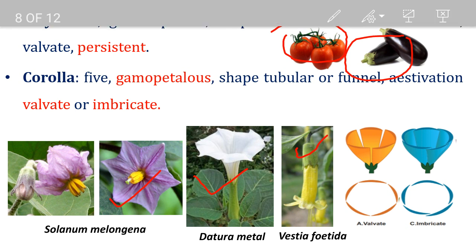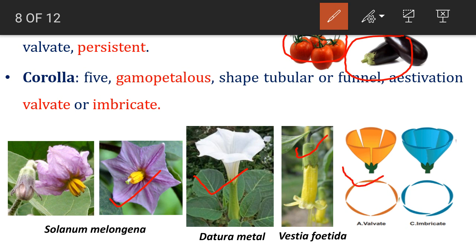Aestivation in the calyx is valvate — members of the whorl remain side by side and do not overlap. The corolla shows both valvate and imbricate aestivation. Imbricate means one member of the whorl is completely inside, one is completely outside, and the other three alternate or overlap each other.